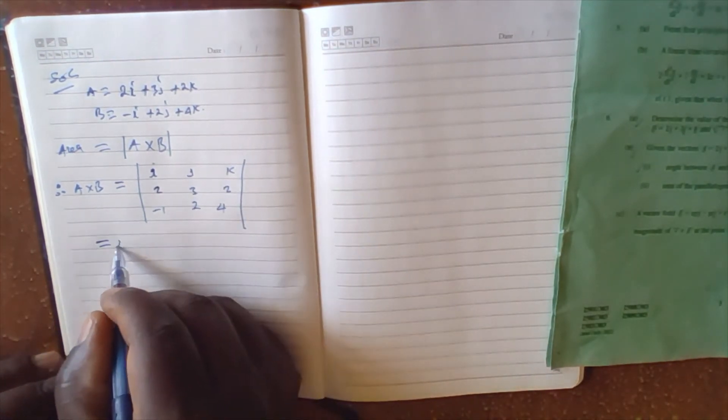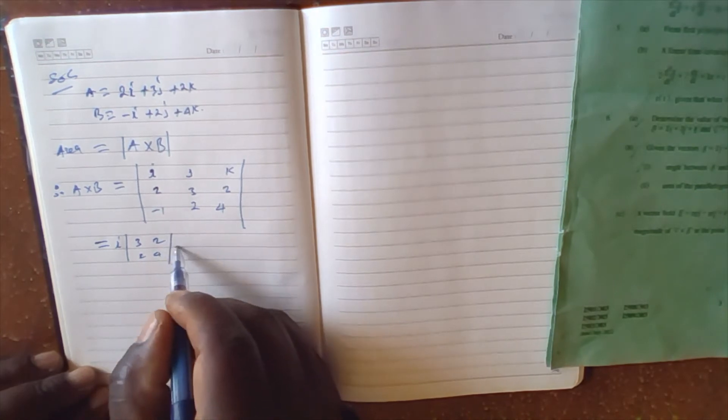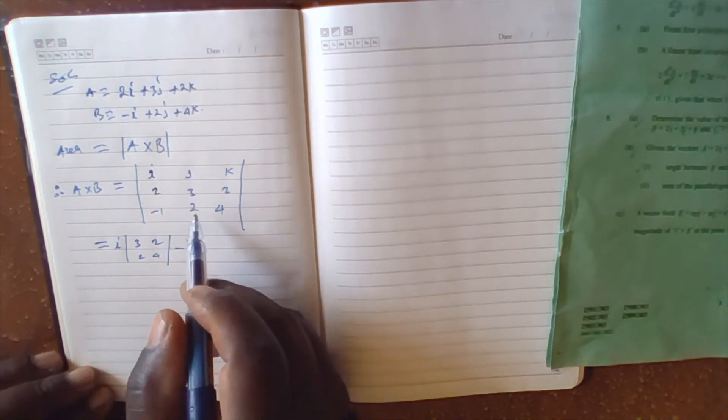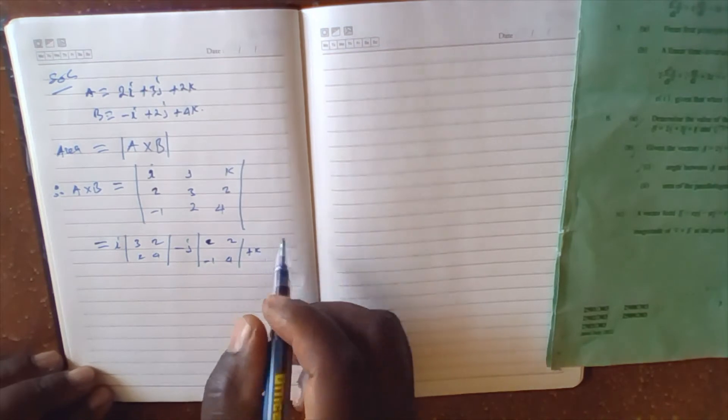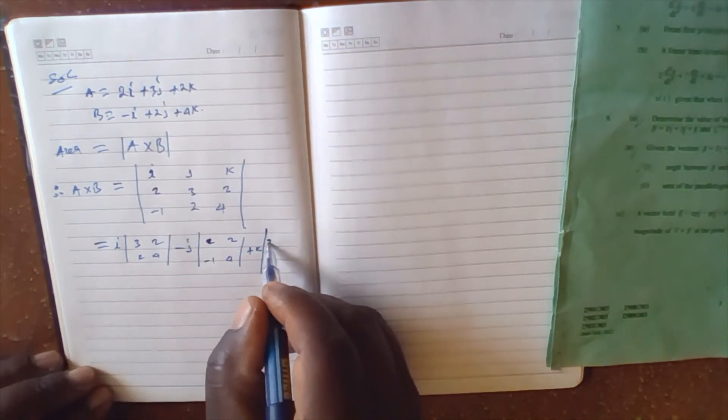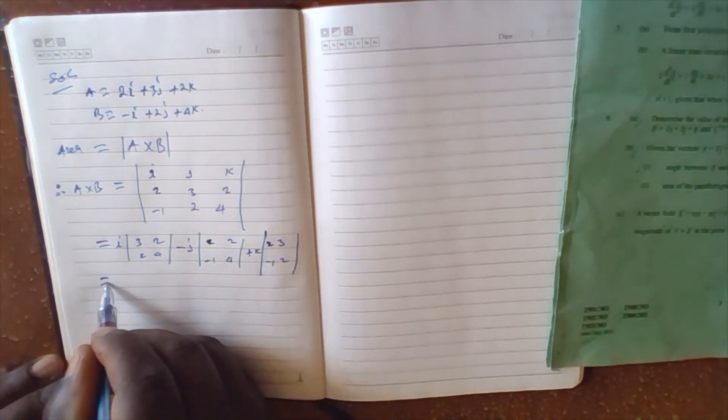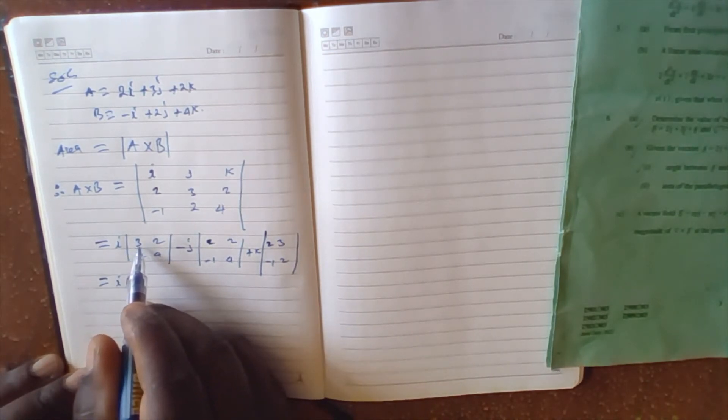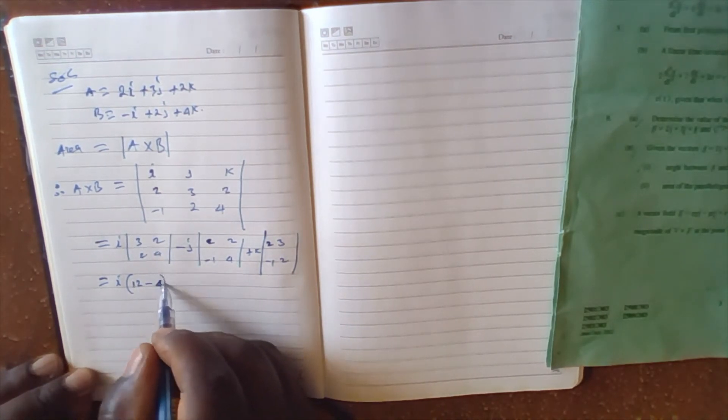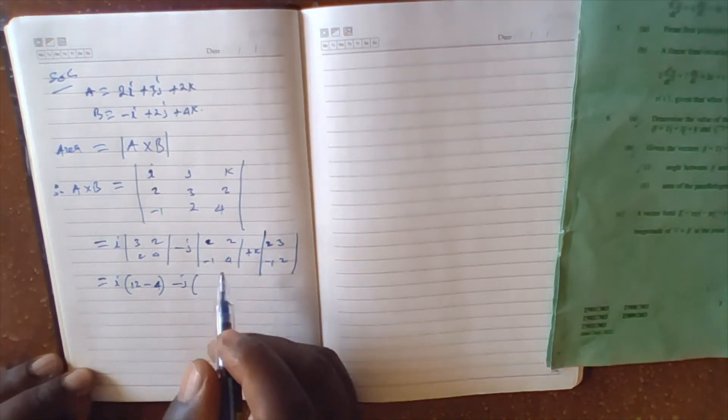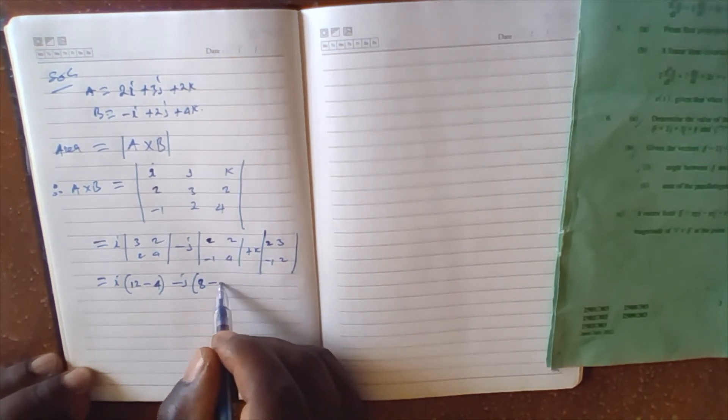We expand this so we have i times 3, 2 and 2, 4, which is 3 times 4 equals 12 minus 2 times 2 equals 4. Then minus j times 2, 2 and negative 1, 4, which is 4 times 2 equals 8 minus negative 1 times 2 equals negative 2.